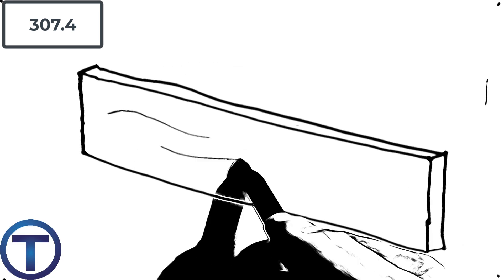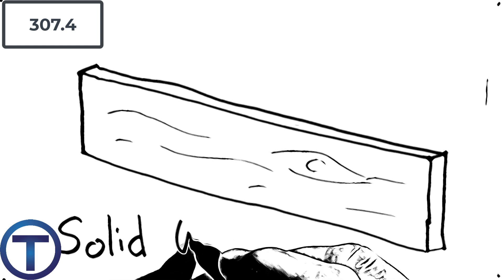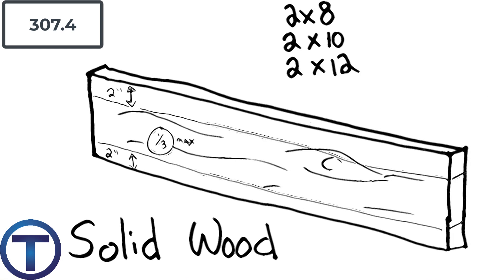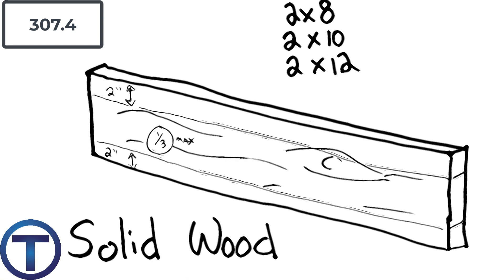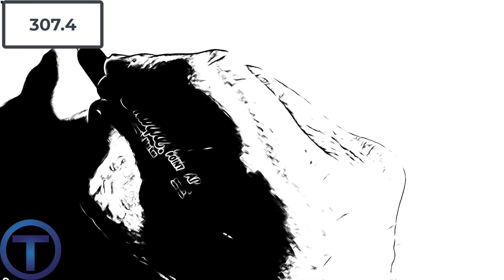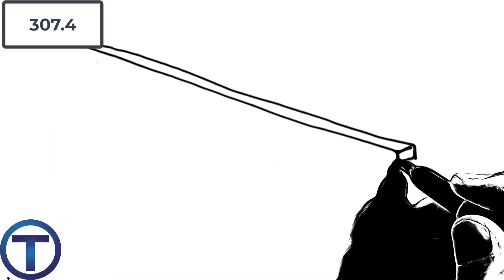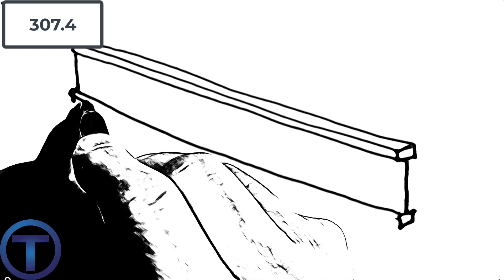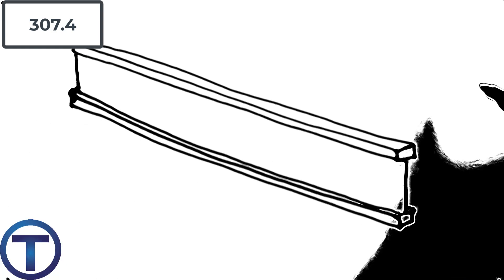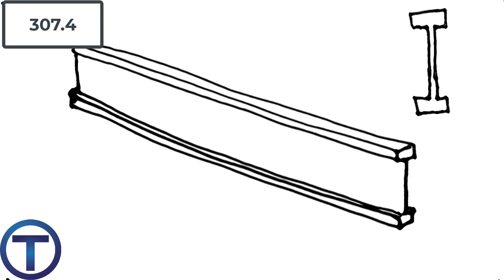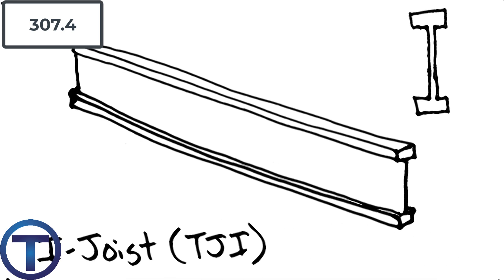Let's talk about things you need to know before drilling into structure. For solid wood joists — 2x8s, 2x10s, or 2x12s — you are not to touch the top 2 inches or the bottom 2 inches, and your hole must be a maximum of one-third the size of the board. More common today are I-joists or TJIs. Named for their shape, they have a strong top and bottom member with OSB webbing inside — that's where we drill our pipes through.